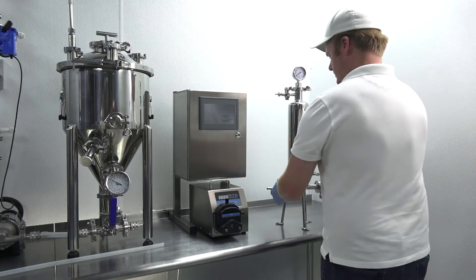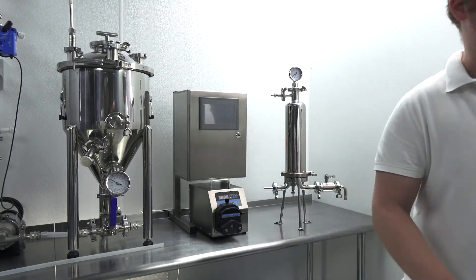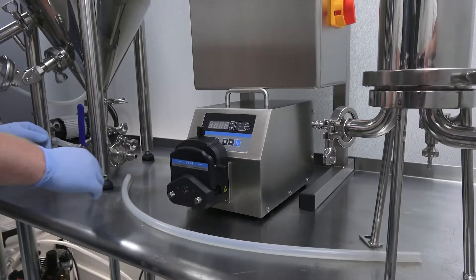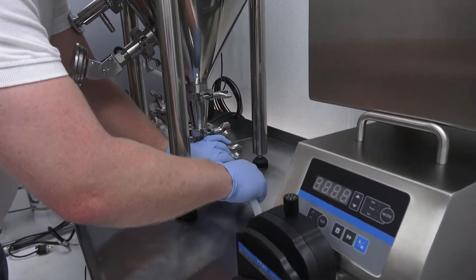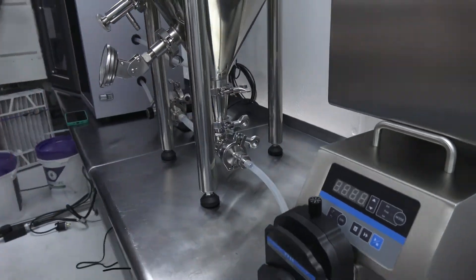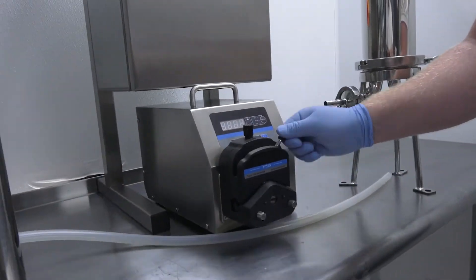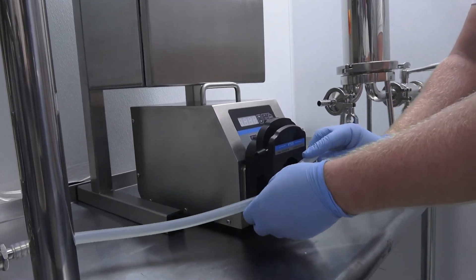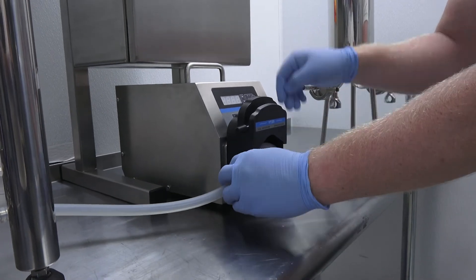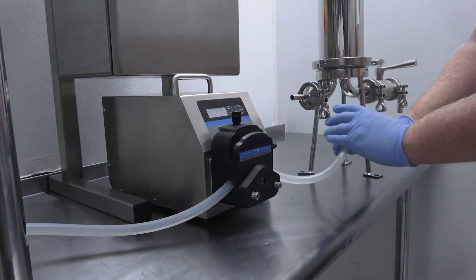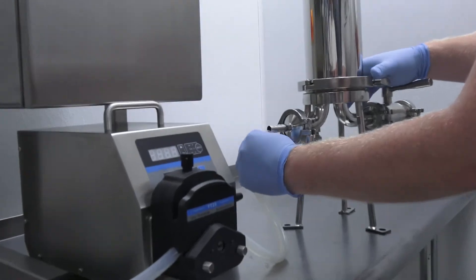We place the filter housing assembly to the right of the peristaltic pump. Now we attach a length of tubing to the tank outlet. We mount the tubing in the peristaltic pump head. Now we securely connect the other end to the filter housing inlet.